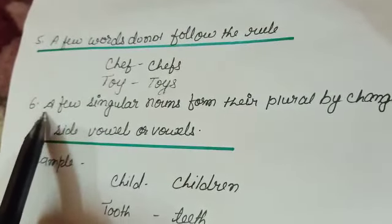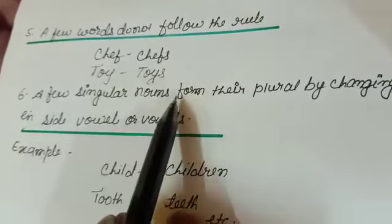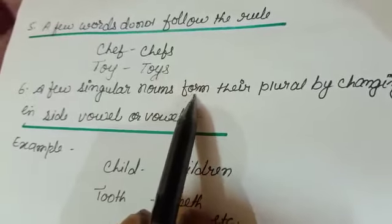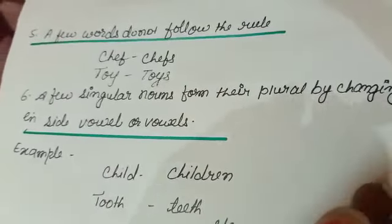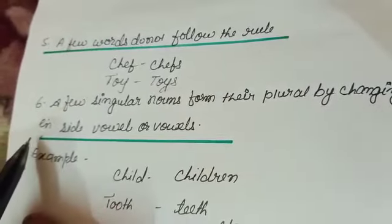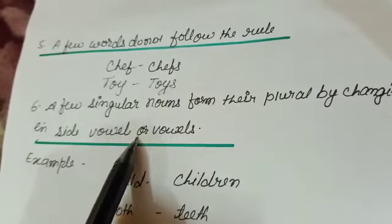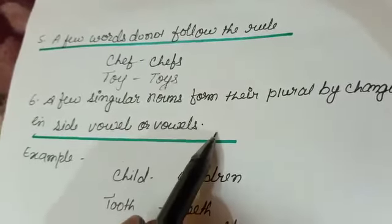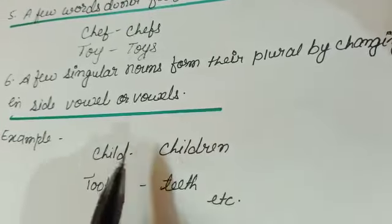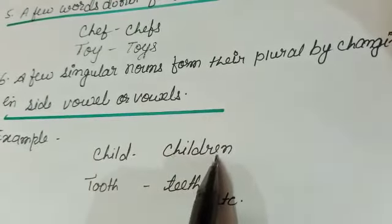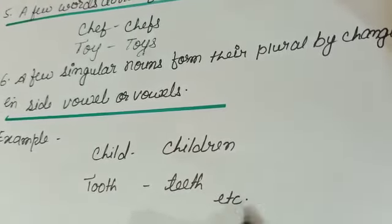Rule number 6: a few singular nouns form their plural by changing the inside vowel or vowels. Example: child → children, tooth → teeth, etc.